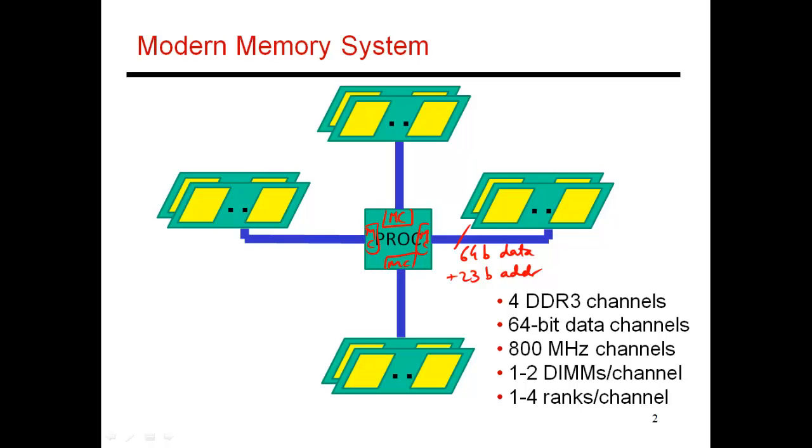Because these channels are running at a relatively high frequency, they can only drive a relatively small load, which is why you can only connect a couple of DIMMs or up to four ranks to this one channel. So there's a limit on how much memory capacity you can associate to this processor chip.